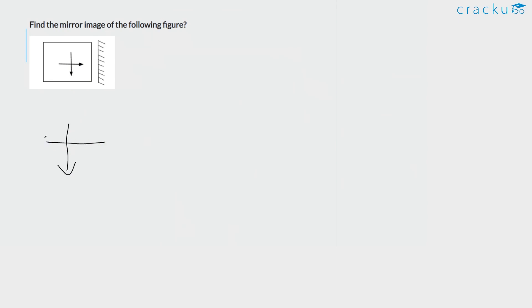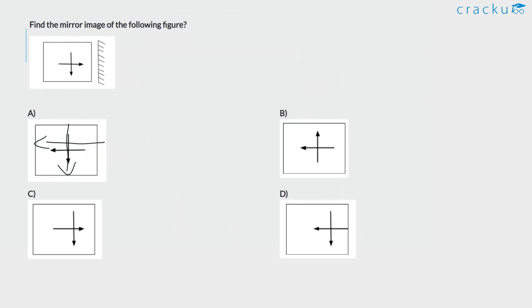Find the mirror image of the following figure. In the mirror image, the up and down sides of the image will remain constant and unchanged. The right will go to the left and the left will go to the right, so the arrow will shift accordingly. Hence, the answer is option A.